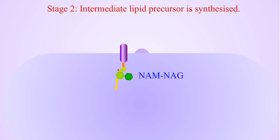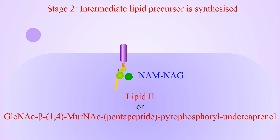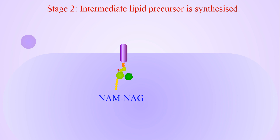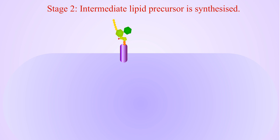The compound formed in this collaboration is known as lipid-1, or N-acetyl-muramylpentapeptide pyrophosphoric undecaprenyl. To lipid-1, N-acetylglucosamine from UDP-N-acetylglucosamine is added to get lipid-2, or N-acetylglucosamine beta-1,4-N-acetyl-muramyl-pentapeptide pyrophosphoric undecaprenol. Lipid-2 is the substrate of the polymerization reaction to form peptidoglycan. With the help of the bactoprenol molecule, lipid-2 is transported to outside the cell membrane.